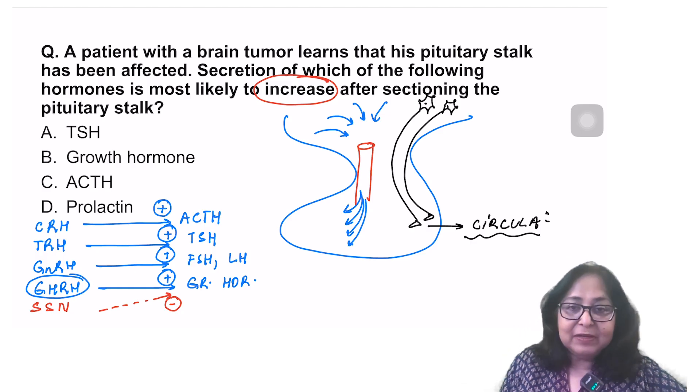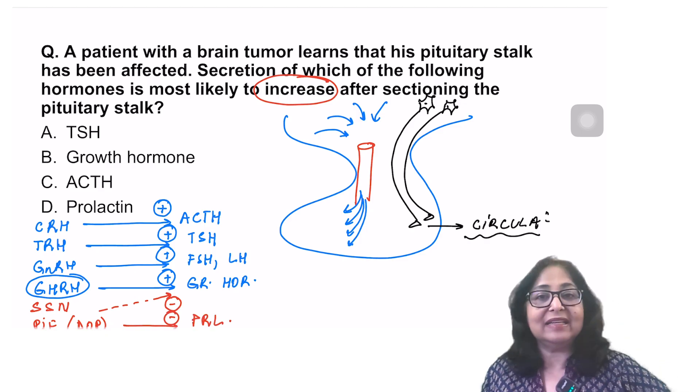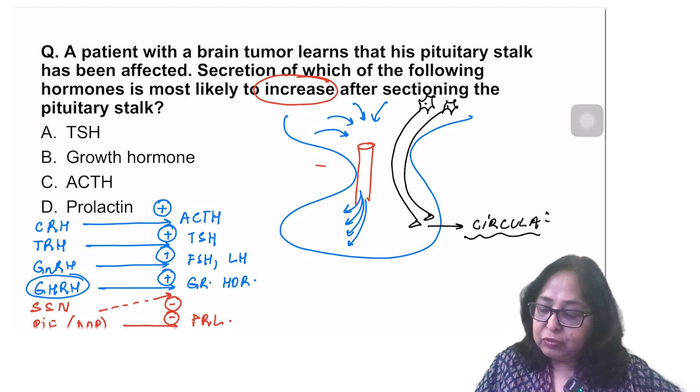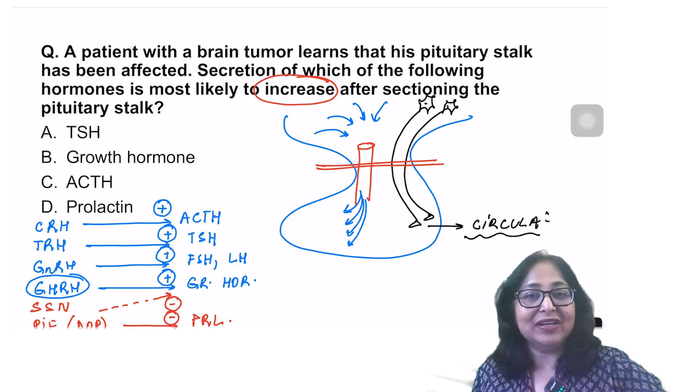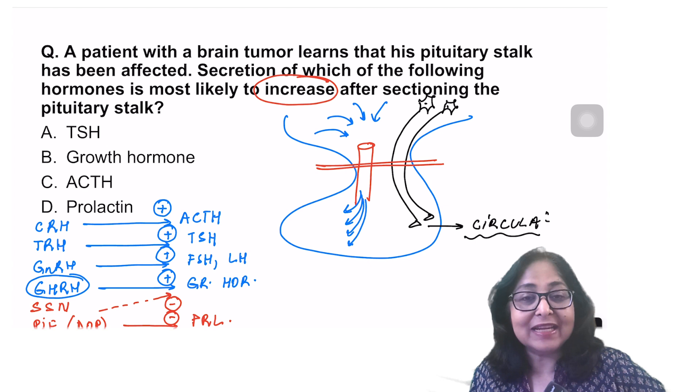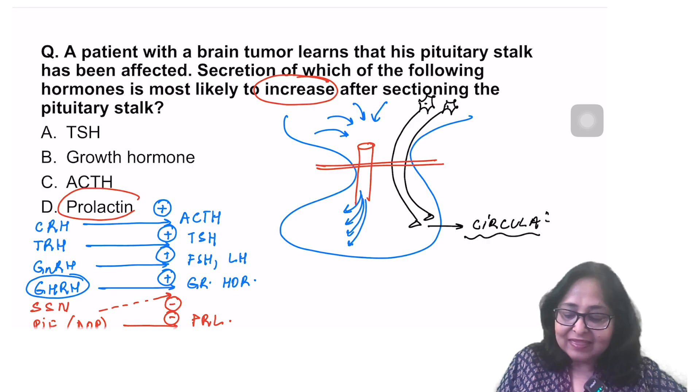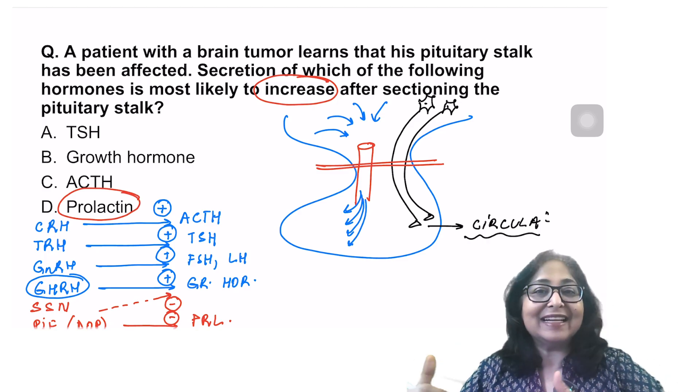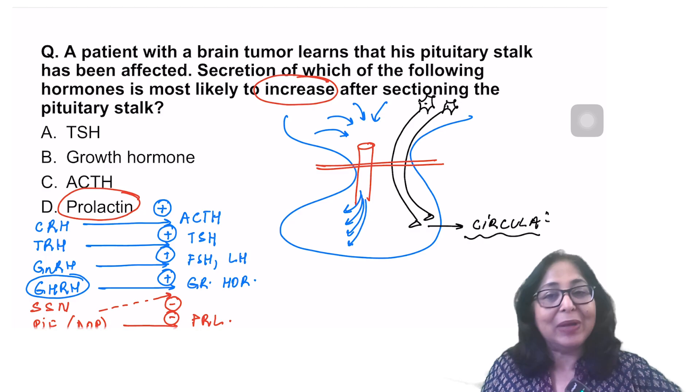There is another inhibiting hormone, which is called prolactin inhibiting factor, which is nothing but dopamine, which inhibits the secretion of prolactin from the anterior pituitary. So if the pituitary stalk is sectioned, all hormones will be reduced, including the posterior pituitary hormones, except one. One hormone will show an increase, and that is prolactin. Because prolactin is being regulated by a prolactin inhibiting factor. If I remove that, prolactin secretion will increase.